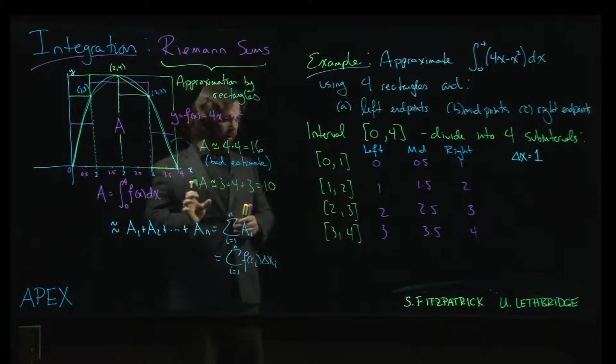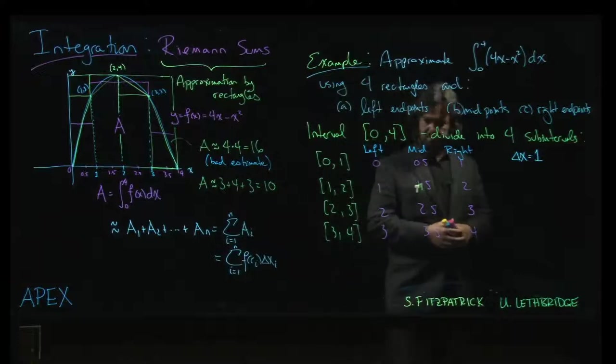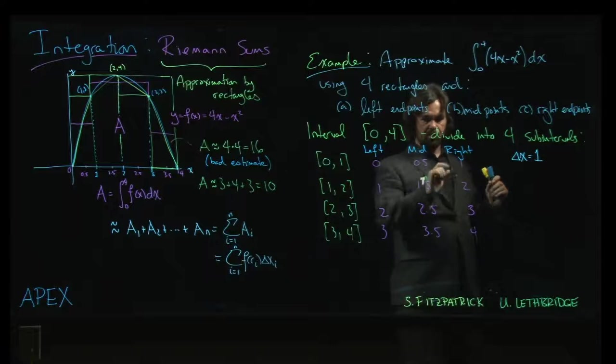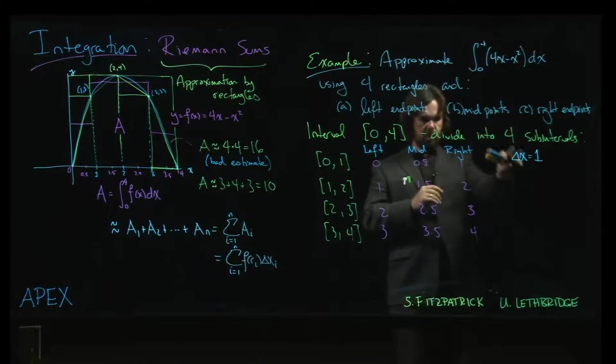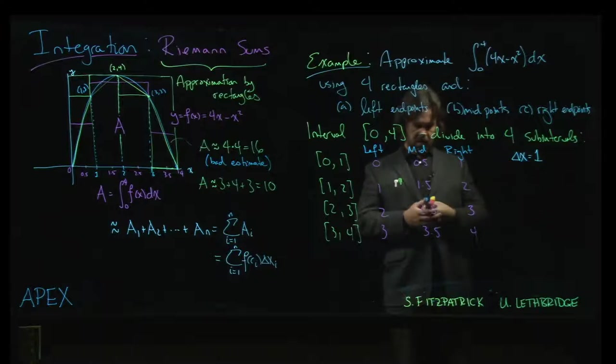The only thing that really changes here is the points that we use to calculate the heights of the rectangle. The width for each rectangle will be one. We just have to think about the heights, and so we have to calculate values of our function in each case.